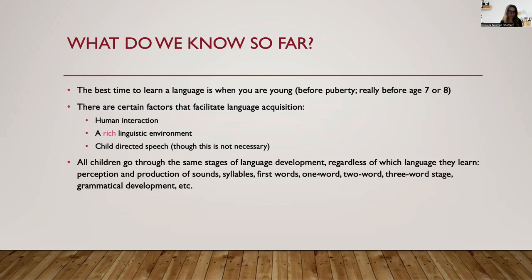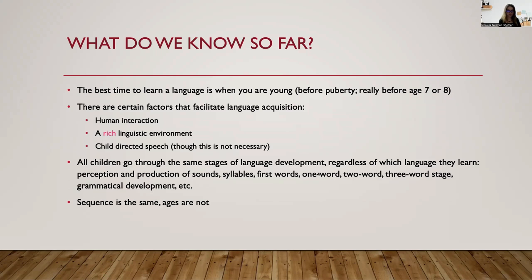Also, all children go through the same stages of language development — we didn't talk about stages here; it's in the reading, so I encourage you to please look at those stages. Regardless of what language they learn, they go through the same stages in the perception and production of sounds, making syllables, the first words, one-word, two-word, three-word stage, grammatical development, and so on. The important thing is that the sequence of the stages is the same, but the ages are not the same — there is variation in when kids start to talk, for example.